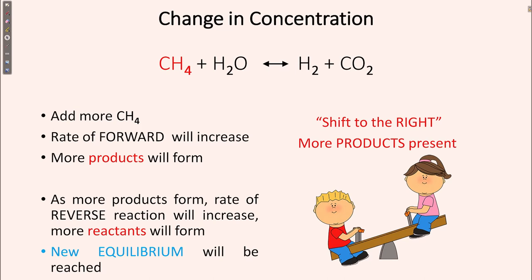As more products form, the rate of the reverse reaction will increase, meaning more reactants will form, and then new equilibrium will be reached. So as the concentration of the reactant changes, this will shift more towards the product — that means shift to the forward direction.